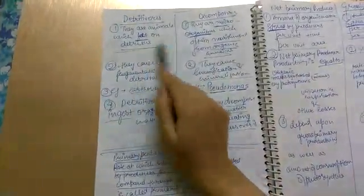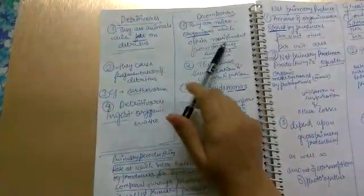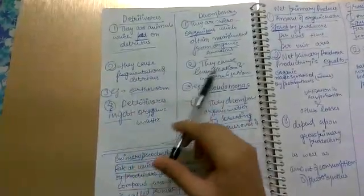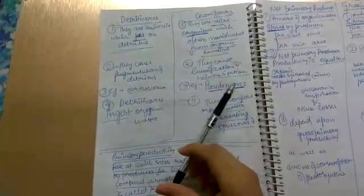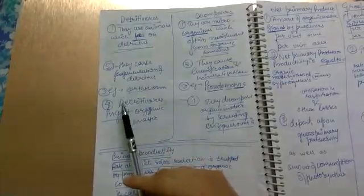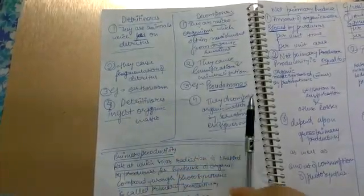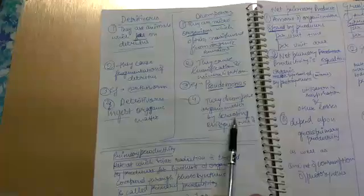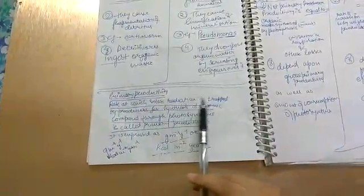Next is detritivores and decomposers. Detritivores are animals which feed on detritus. Decomposers are microorganisms which obtain nourishment from organic remains. Detritivores cause fragmentation of detritus. Decomposers cause humification and mineralization. Example of detritivore: earthworms.